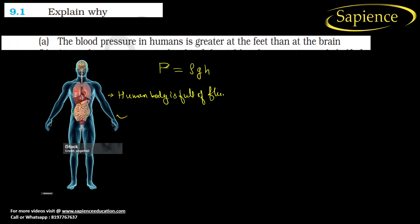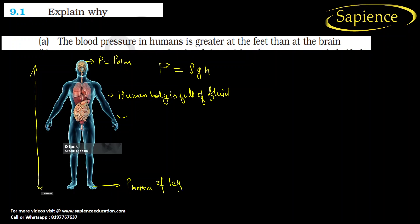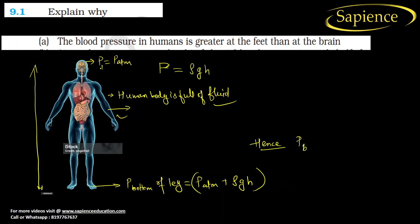The human body is full of fluid. At the brain, pressure equals atmospheric pressure. But the pressure at the bottom of the leg equals atmospheric pressure plus rho into G into height. This is because there is fluid inside the human body, creating high pressure at the bottom.